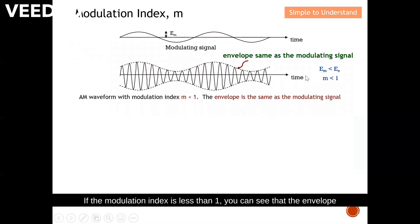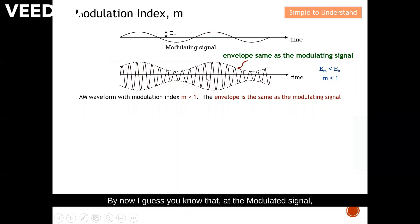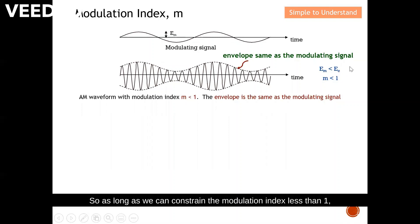If the modulation index is less than one, you can see that the envelope of the modulated signal is exactly the same as the modulating signal. The envelope contains the information, which is the modulating signal. So as long as we constrain the modulation index to less than one, we can easily recover back the modulating signal, as shown in this diagram.